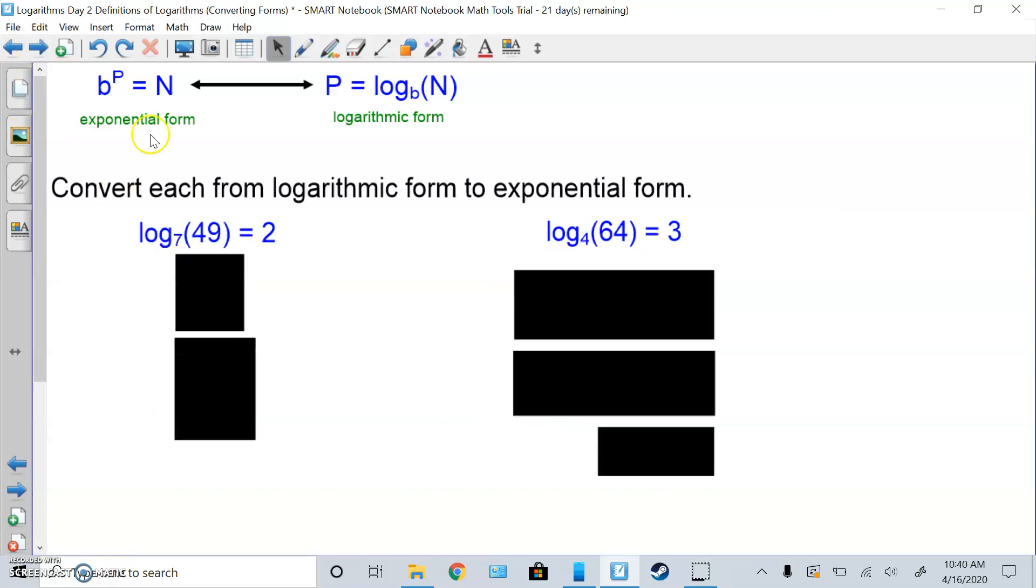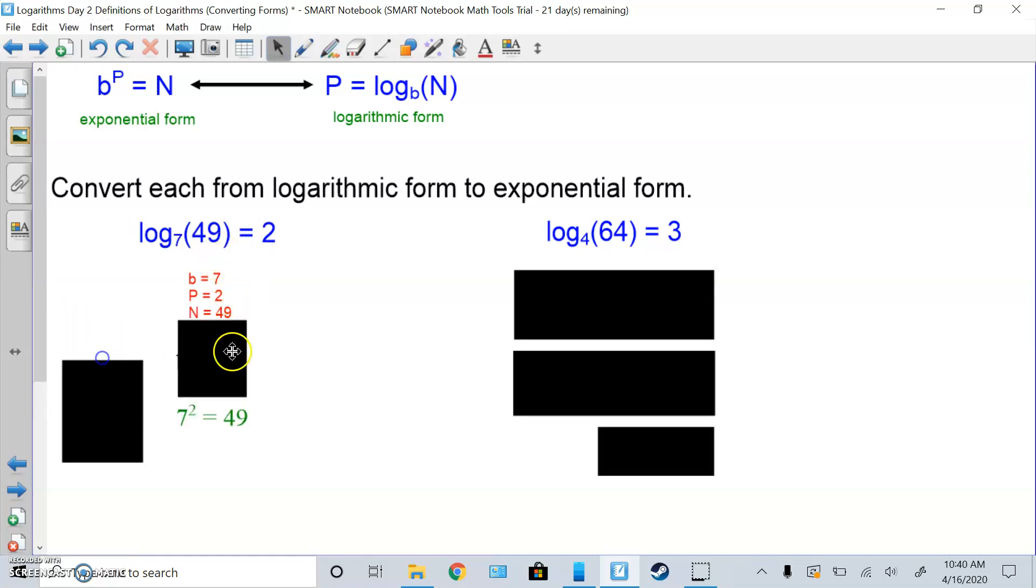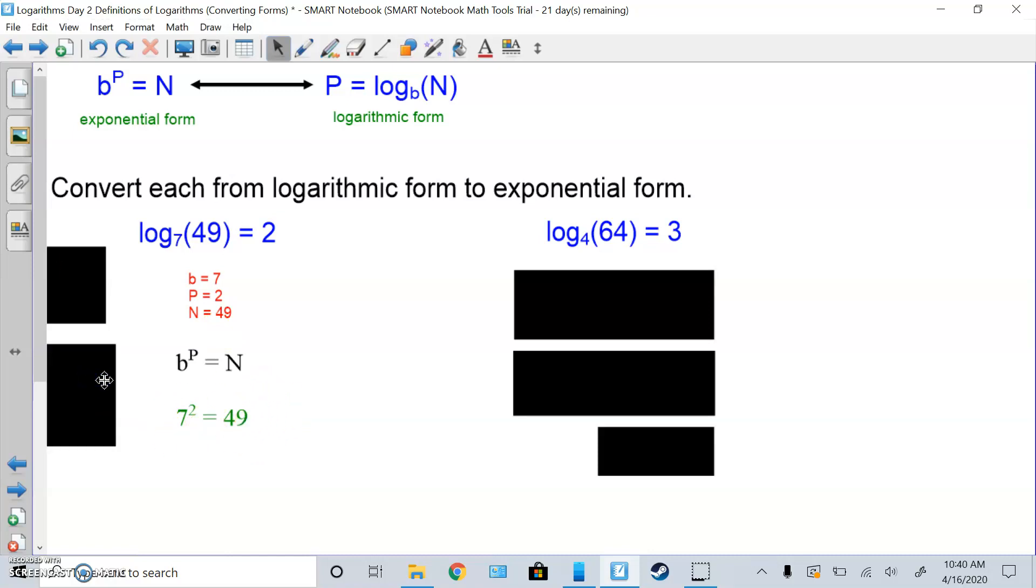So let's go to the reverse. Convert each of the following logarithmic form into exponential form. So identify the letters. Base down here is 7. The power, P is by itself, is 2. And the number inside the log is 49. Once you have this 3, you fill in the formula, B to the P equals N. So B to the base of 7, the power exponent is 2. 7 squared equals 49. And that's a true fact. It has to end on the true fact. Sometimes kids do it backwards, they'll say 2 to the 7 of the power is 49. That's wrong. So order does matter.